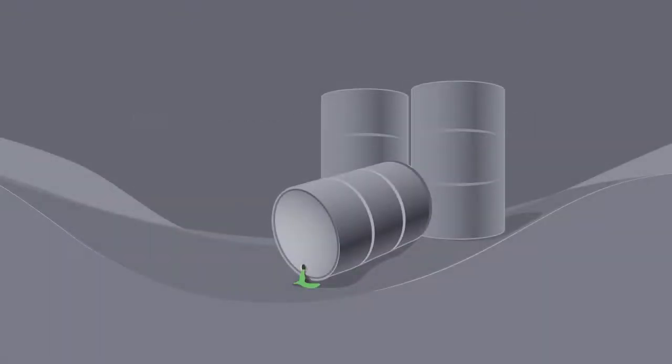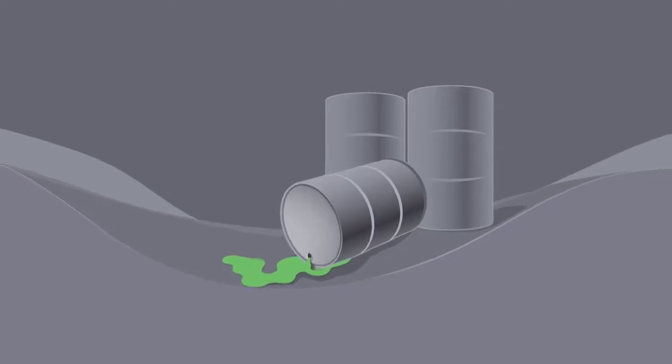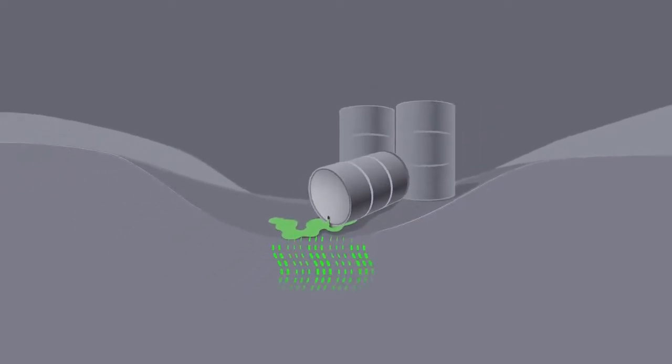TCE that is spilled or disposed of on soil, or that leaks from storage tanks, can contaminate the soil around it. It evaporates less easily from soil and may stick to soil particles and remain for a long time.